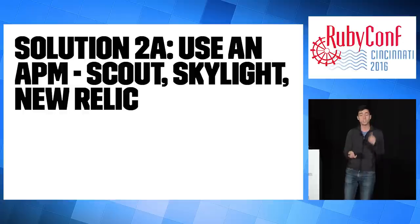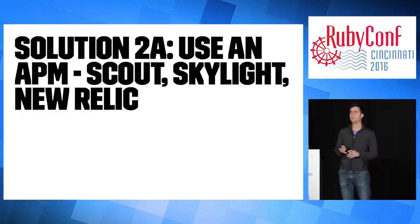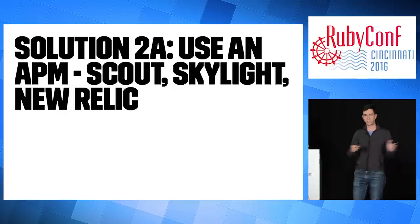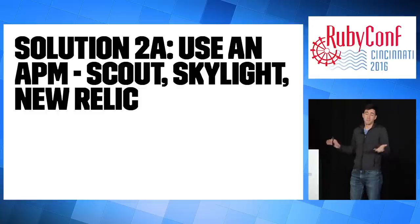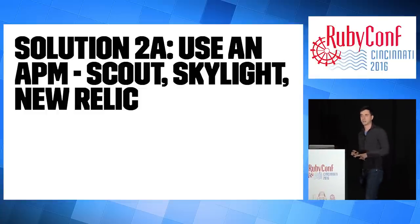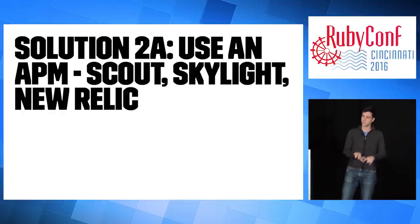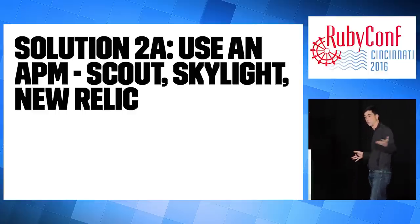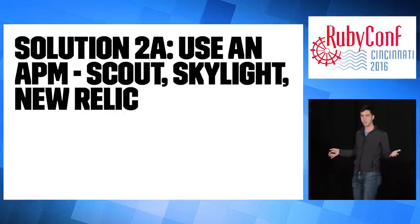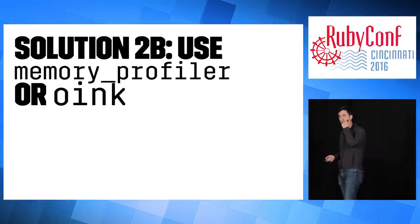You need to use an APM to find these problems. New Relic is not great for this unfortunately — lots of features but none are really all that great for memory. Scout and Skylight are better in this area. Skylight's profiler is really nice and their memory information is great. Scout works as well — you can get it for free. It tells you how many objects you're allocating per controller action.